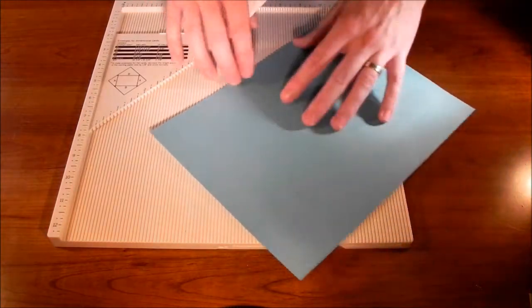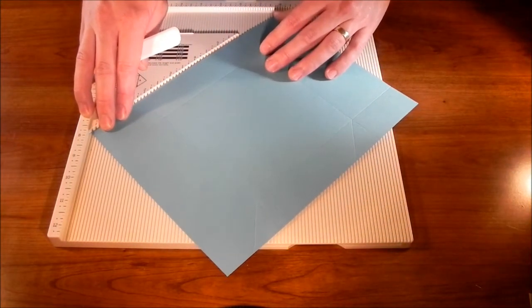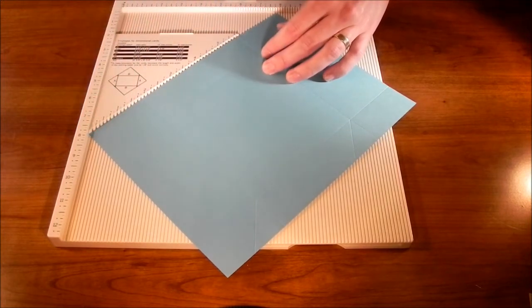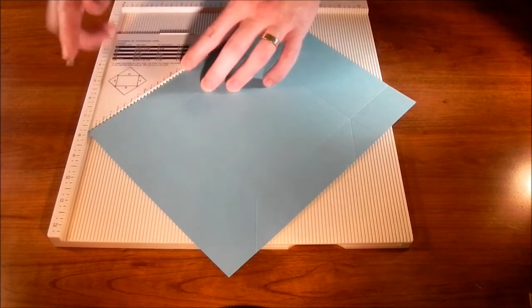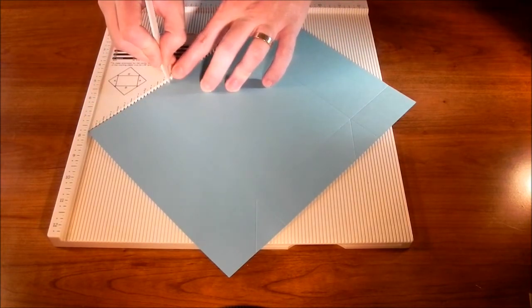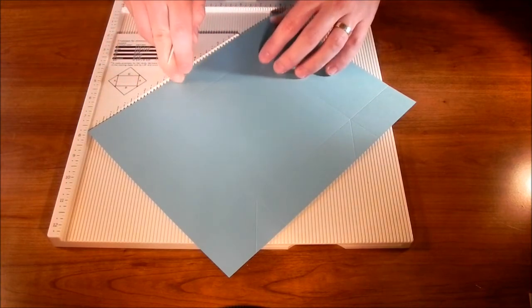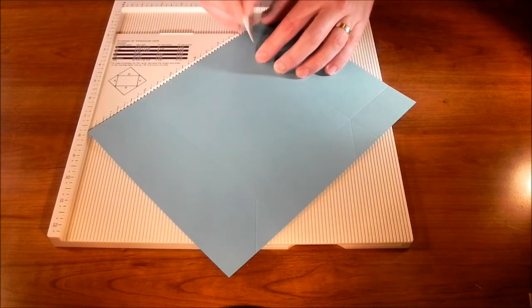So now we're just going to turn the paper, and we're going to do the same thing on the other side. Again, we're going to line this up at 7 and 3/4 on both points, and then we're going to take from here 3 inches just to where the horizontal and vertical lines meet. Up here we're going to do 6 and 7/8 again to where those lines meet.